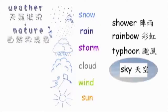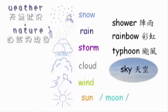再來，請看看太陽是出現在哪裡呢？天空中。天空的說法是 sky。在天空中，白天看到的是太陽 sun，晚上呢，看到的是月亮 moon，以及星星 star。